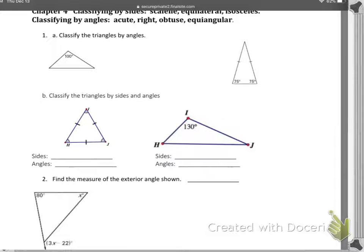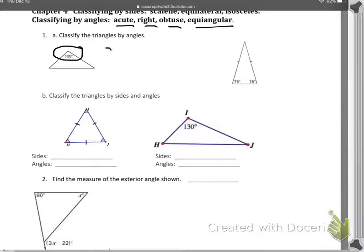If you're going to classify triangles by angles, you have these choices up here. I look at this first triangle and I notice that it has an angle that's greater than 90. That alone allows me to say right away that it must be an obtuse triangle. So that answer is obtuse.